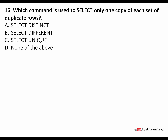Which command is used to select only one copy — that is, duplicate copies are removed from each set of duplicate rows? The answer is SELECT DISTINCT. When we use SELECT DISTINCT, the duplicate rows are removed.